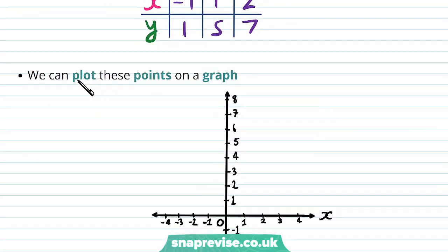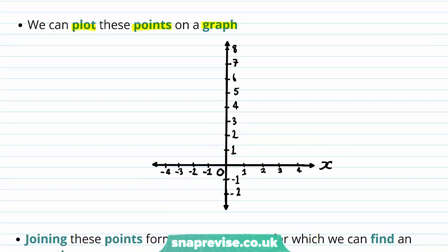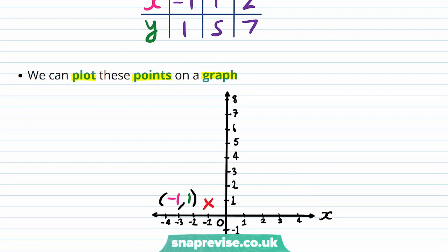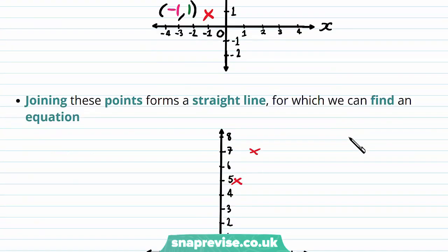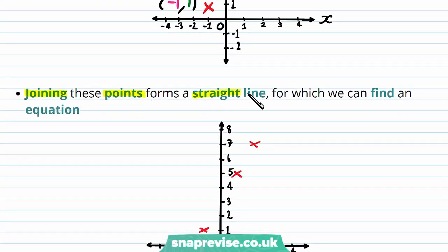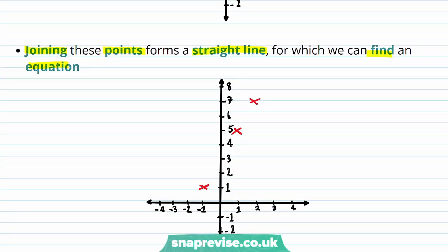We can then plot these points on a graph: namely we have our minus 1, 1 here, and then we have our 1, 5 which is here, and then we have our 2, 7 which is here. Joining these points forms a straight line, for which we can find an equation. So we have these three points, and we can plot a straight line which goes through all three.